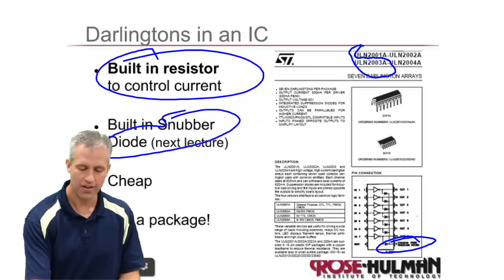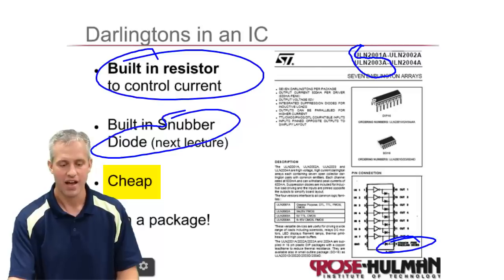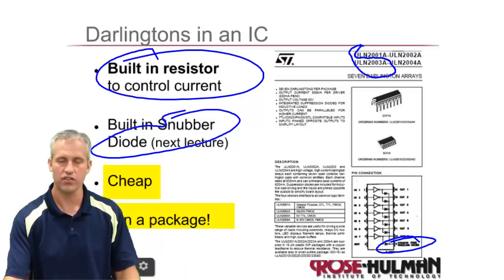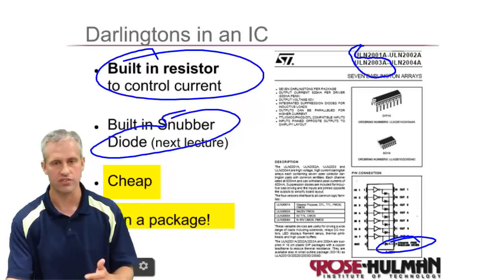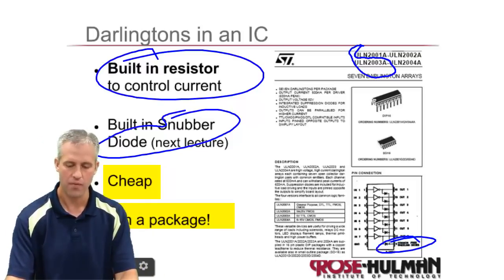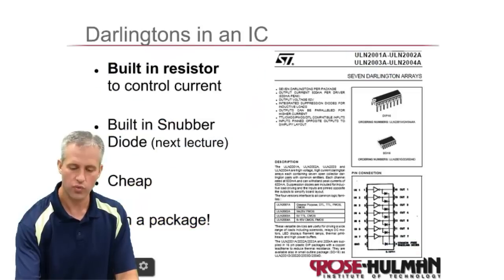You just have to connect this certain line on the chip, which we'll talk about next time. They're cheap. I'm always a fan of cheap, and they also come with seven in a package. You get all these great things. You've got seven different transistors. You don't need a resistor. You've got the snubber diode for free.